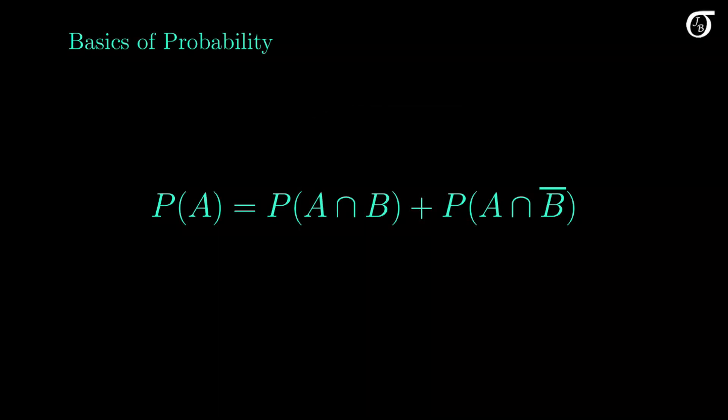Here I'll look at a simple but important identity in probability. For two events A and B in a sample space, the probability of event A is equal to the probability of the intersection of A and B, plus the probability of the intersection of A and B complement. This is a special case of the law of total probability, and it comes up in applied probability problems and can be helpful in the proof of some concepts.